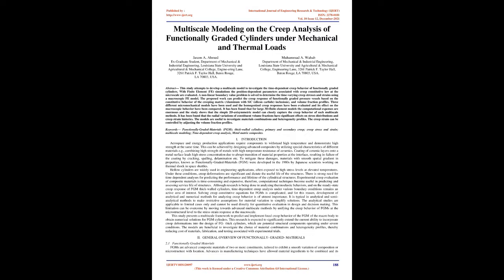Aerospace and energy production applications require components to withstand high temperature and demonstrate high strength at the same time. This can be achieved by designing advanced composites utilizing special characteristics of different materials, e.g., combining high strength of metals with high temperature resistance of ceramics. Coating of ceramic layers onto a metal surface leads to high stress concentration due to abrupt transition of material properties at the interface, resulting in failure of the coating by cracking, spalling, delamination, etc.